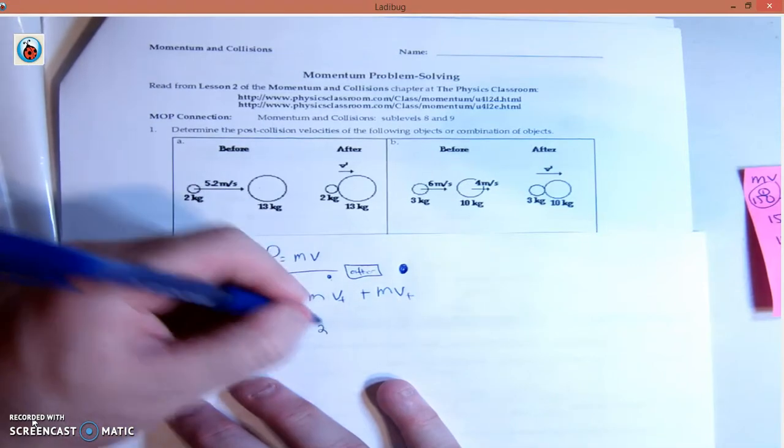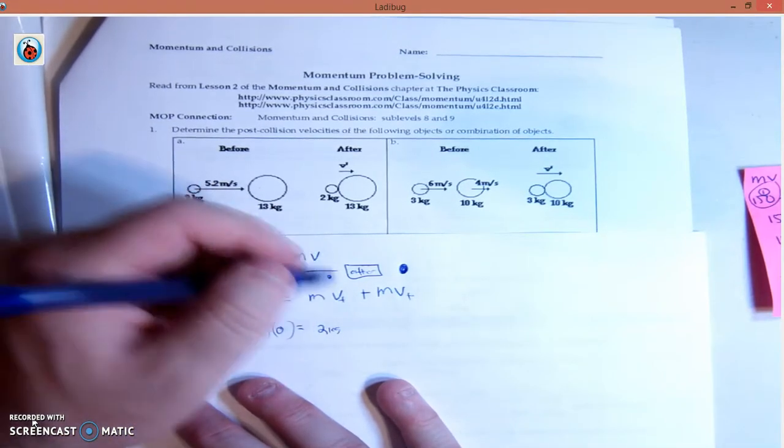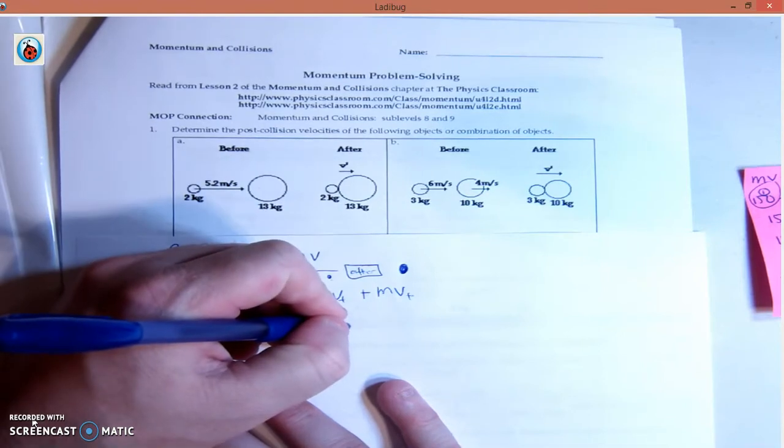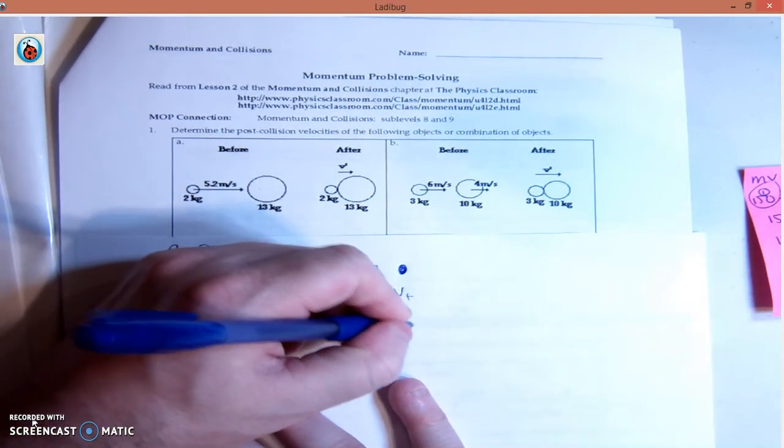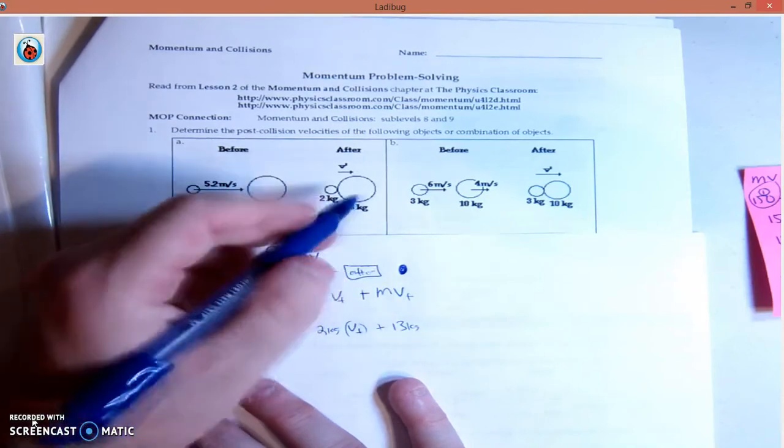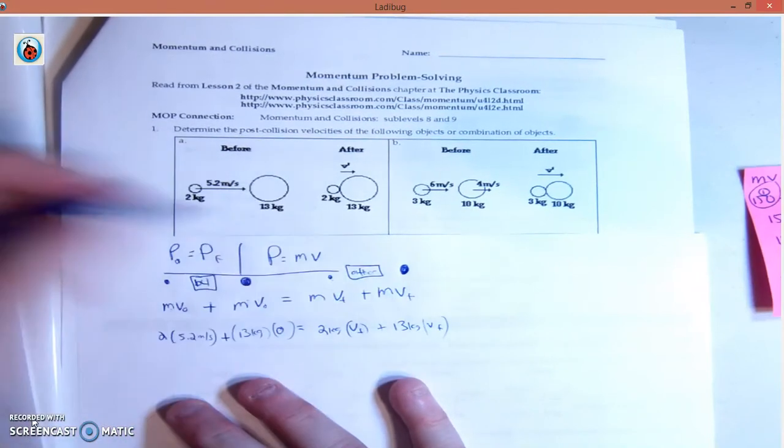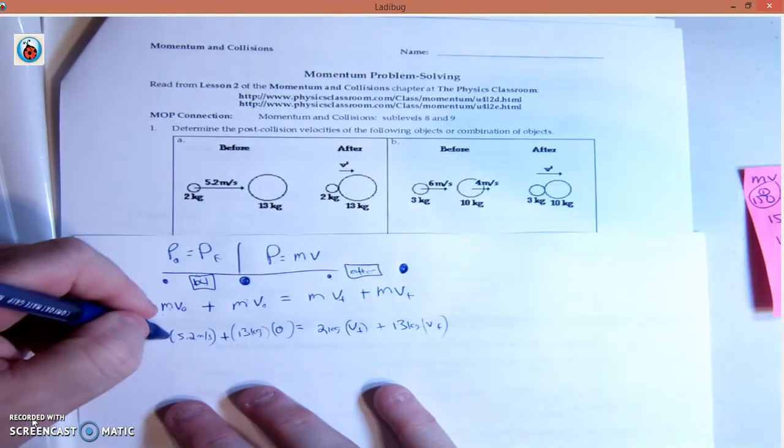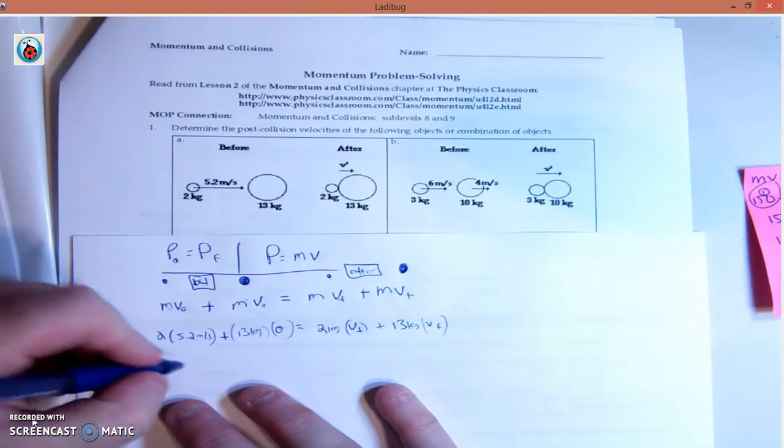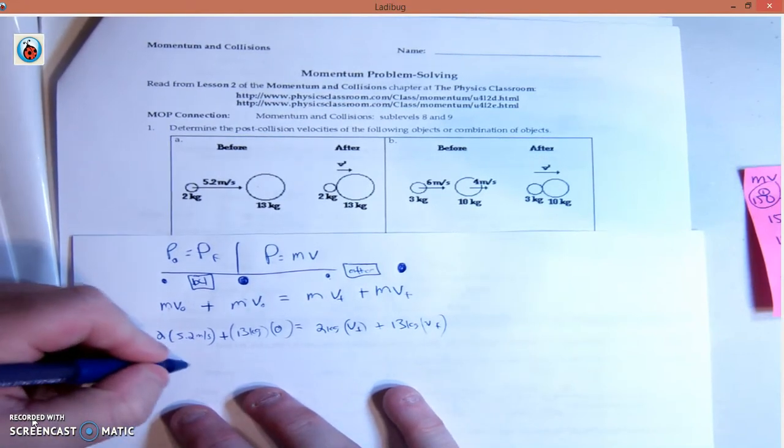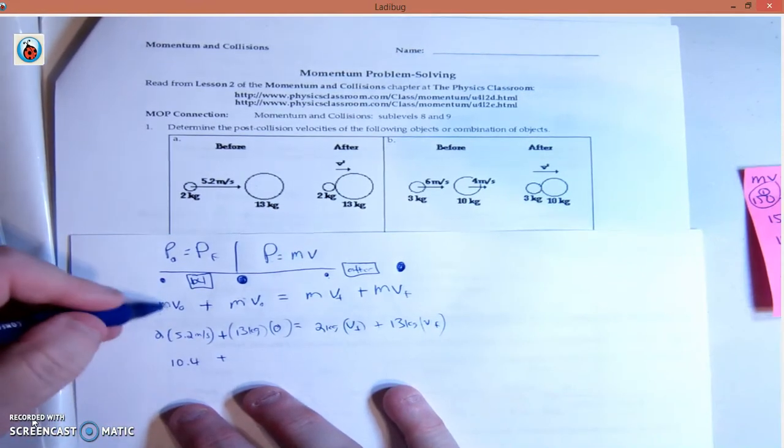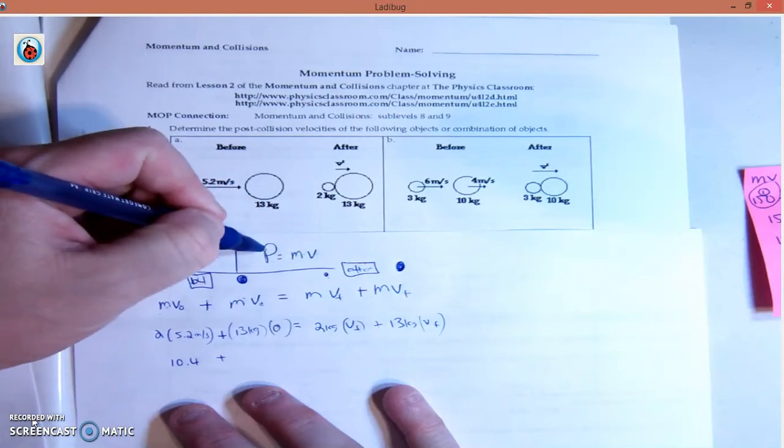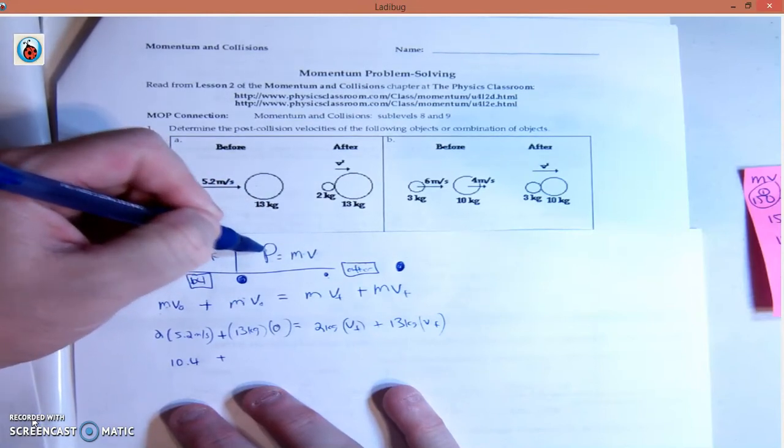Equals same mass, 2 kilograms times final velocity we don't know, plus mass 13 kilograms times final velocity we don't know. So let's keep moving. 5.2 times 2, that's 10.4. Plus, remember this is mass times velocity.